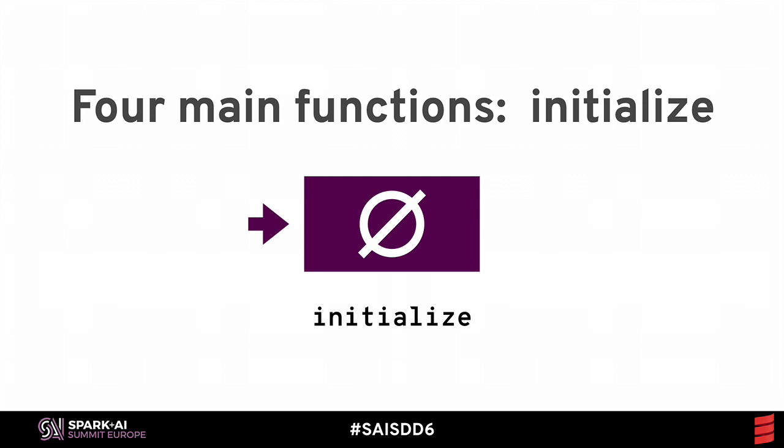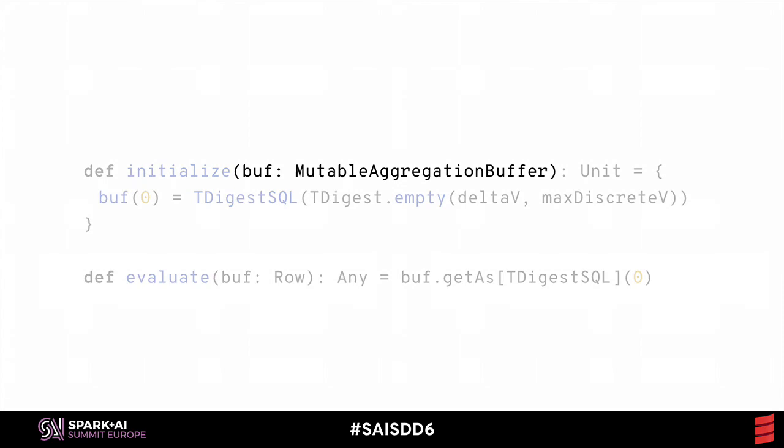The initialize operation basically creates an empty aggregation buffer. The aggregator expects its working row type to be a mutable aggregation buffer. You're going to see a few different row types appear here — this is a good example of doing things the way that Spark expects. I initialize the working buffer with an empty version of my aggregator.